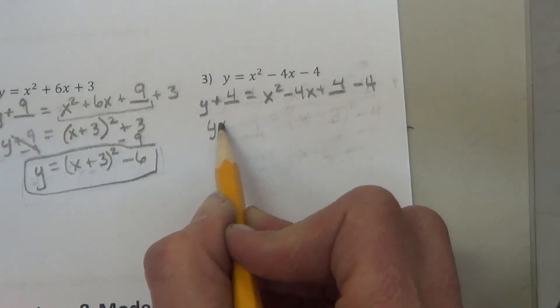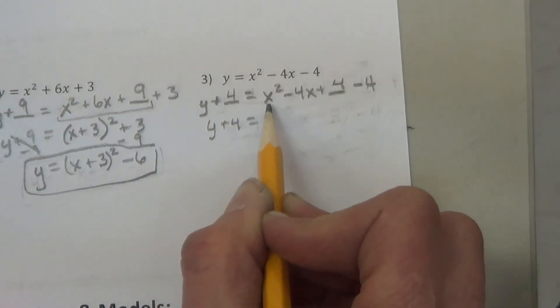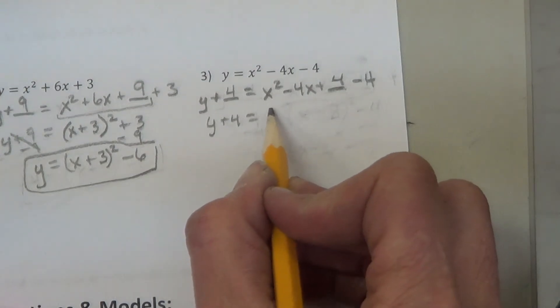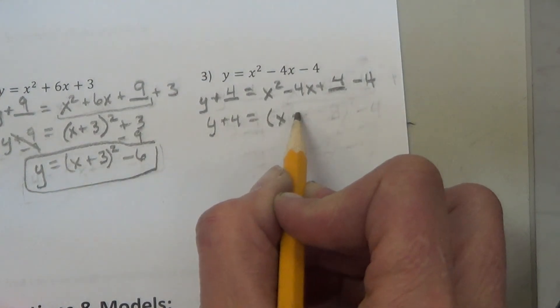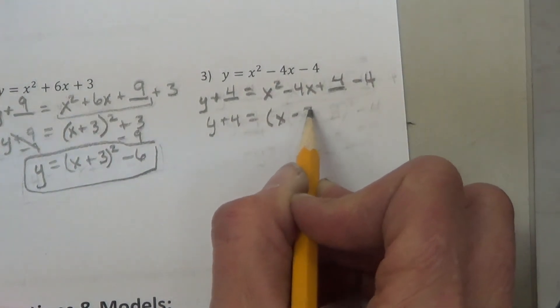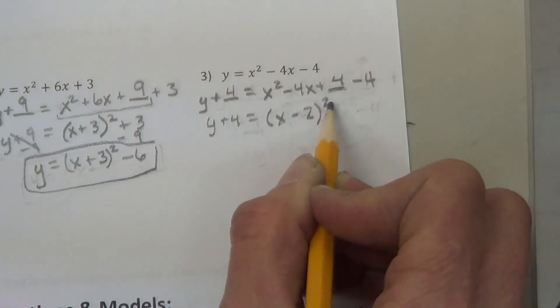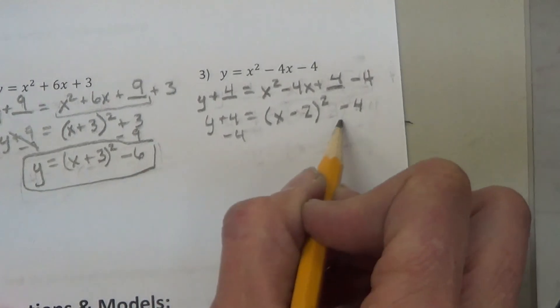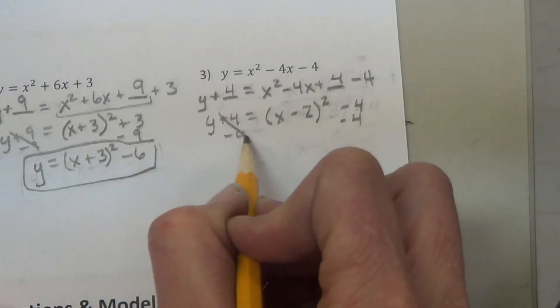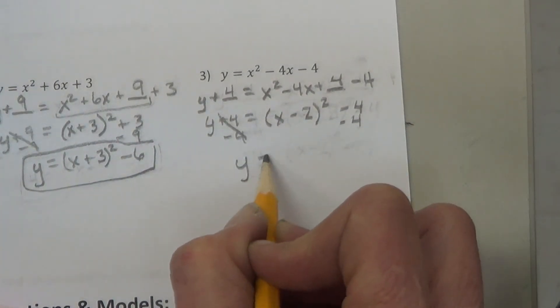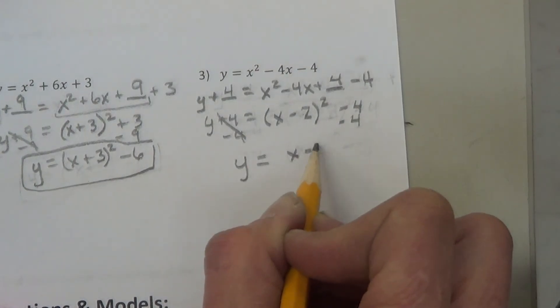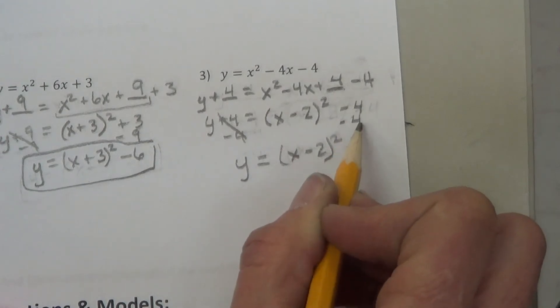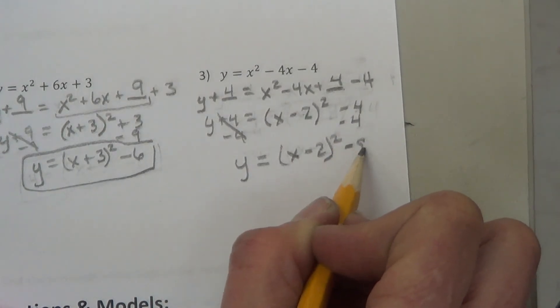y plus 4. Now our whole goal in doing that was to get that trinomial. Don't cancel those two out even though it looks funny there. So we have x minus square root of 4 is 2 minus 4. Now we subtract 4 from each side because we're trying to get the y alone. We get y equals x minus 2 squared, negative 4 and a negative 4 would be a negative 8.